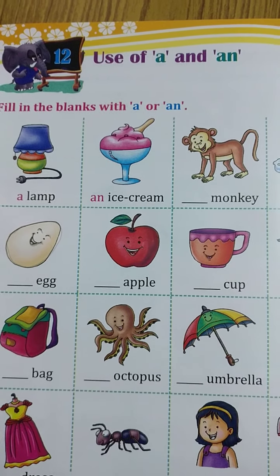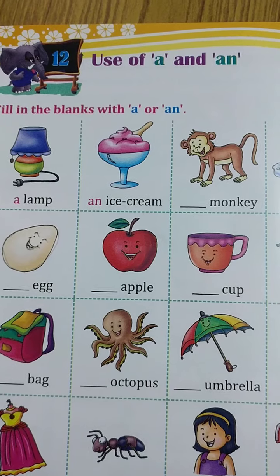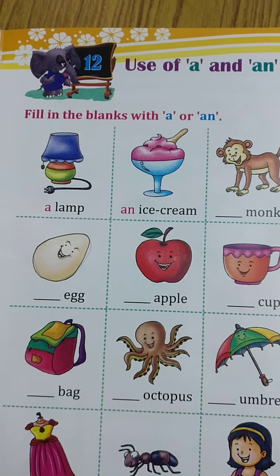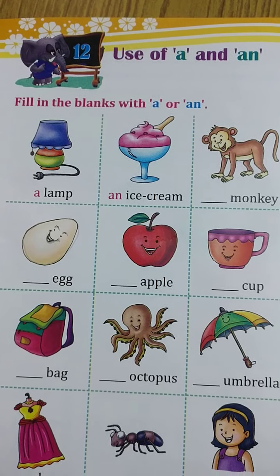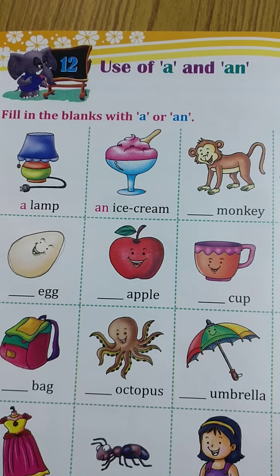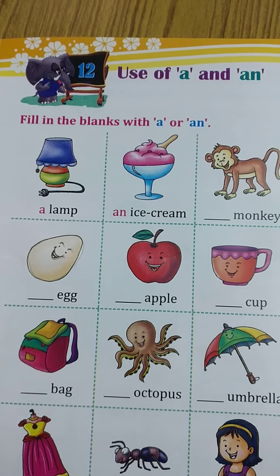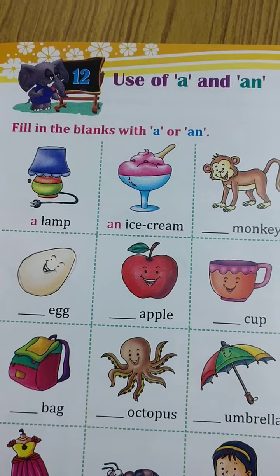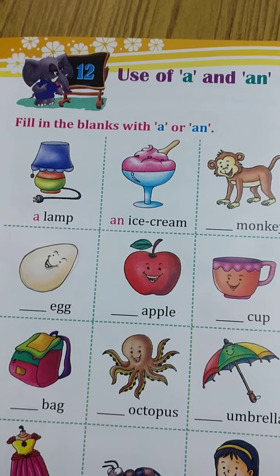Do you remember the vowels and consonants which you have studied in the last class? Let me recall. There are 26 alphabets in our English, A, B, C, D and so on, A to Z. In this, A, E, I, O, U — these 5 letters are counted as vowels.